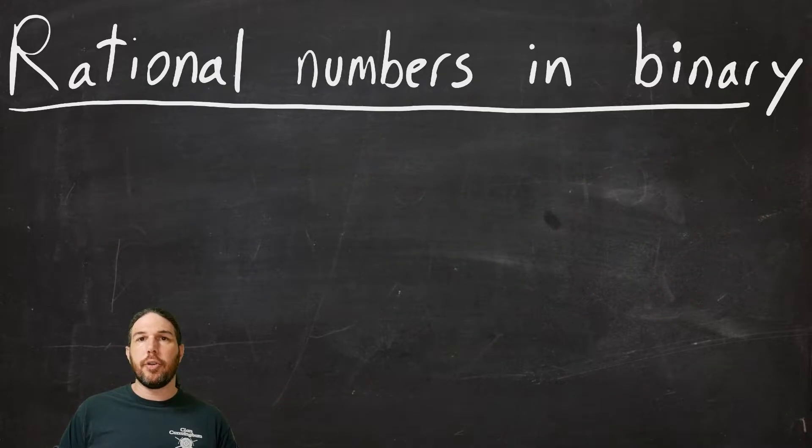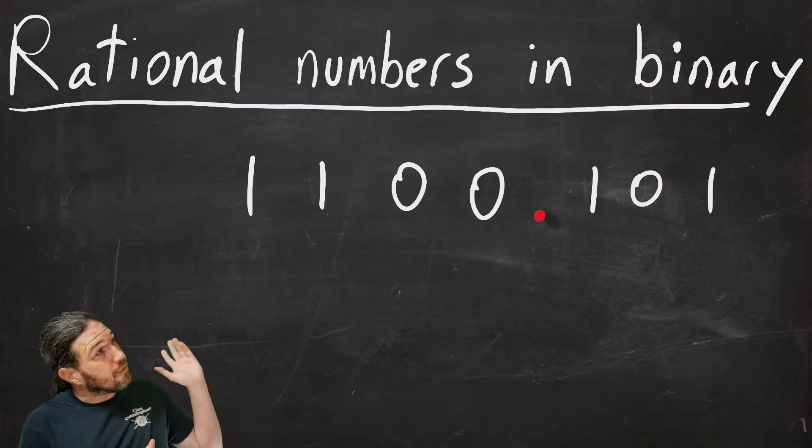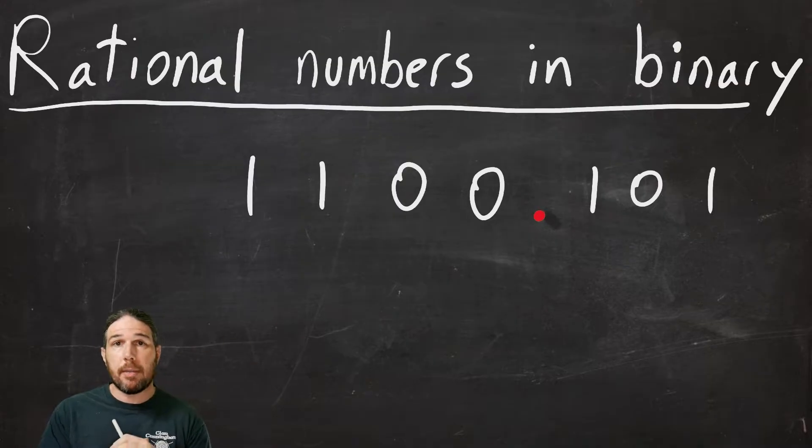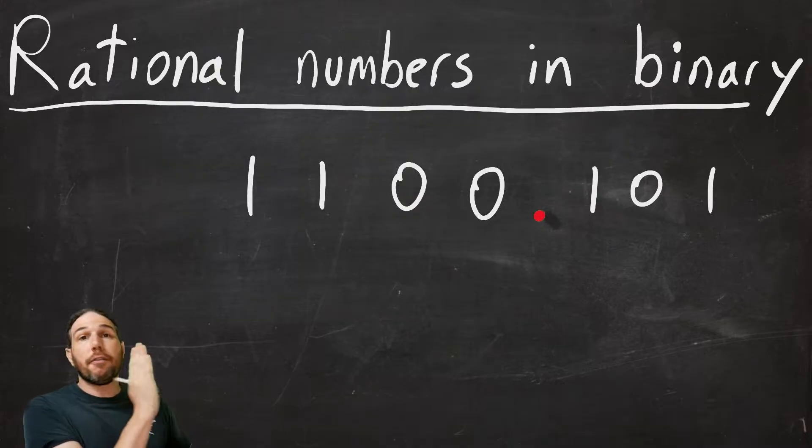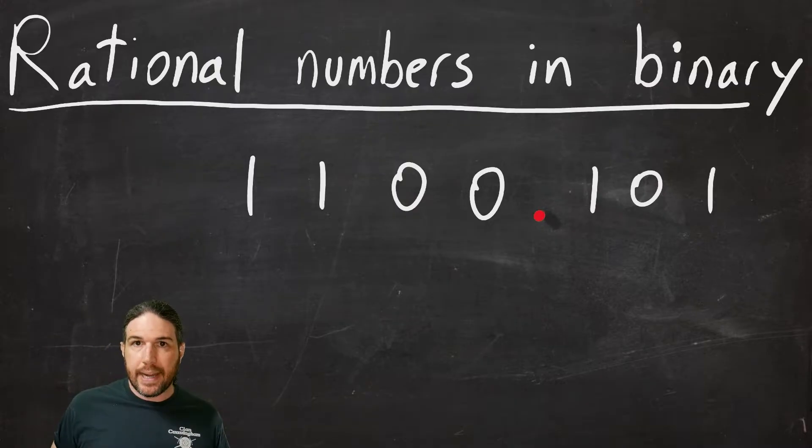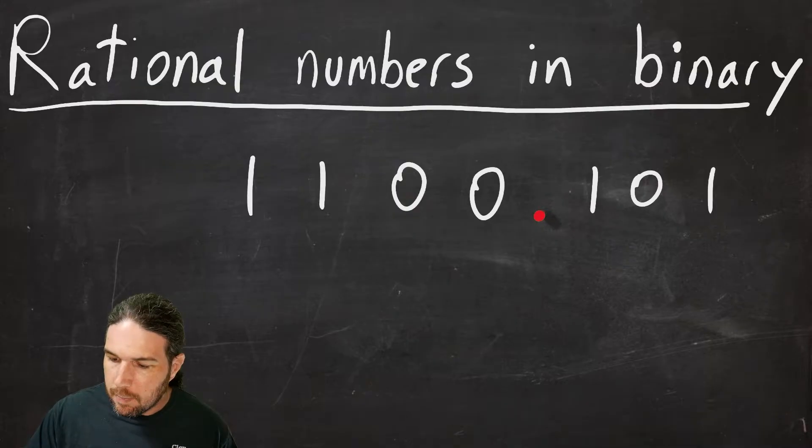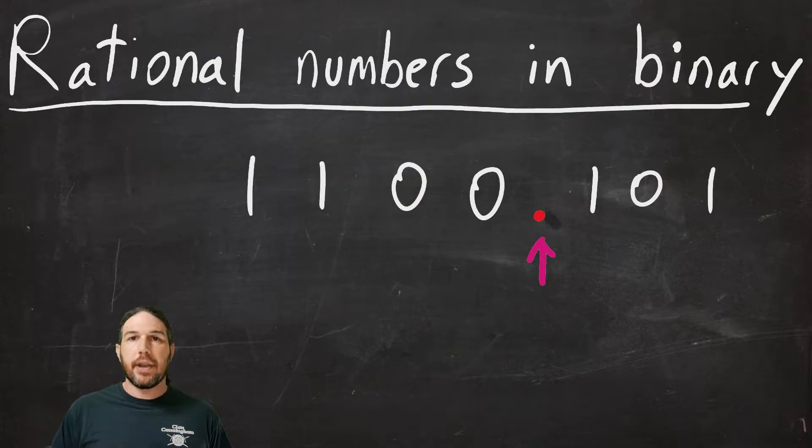So now let's look at numbers that are not whole numbers, rational numbers. You might wonder why I'm saying rational numbers specifically and not decimals or fractions. The answer is you cannot actually accurately represent irrational numbers in binary, because all computers have some limit on how many bits they can hold, how many bits they can process. Here we've got a number that might be in decimal or might be in binary. We're not really sure yet, but you will notice that it is not a whole number because it has a decimal point.